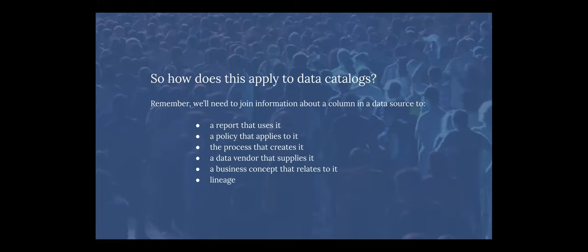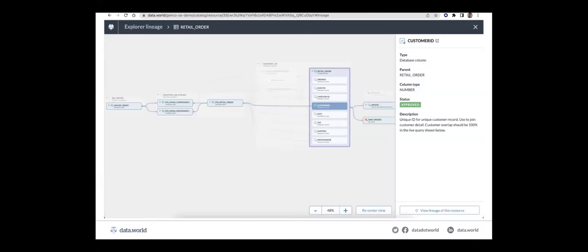The last thing in that list is lineage — that's something we've added recently to the Data.World platform, because lineage is really just a graph-type connection of various tables that were derived from each other. There's upstream and downstream. So that's an example, the visual example that we have in the tool, because that's also part of the knowledge graph.